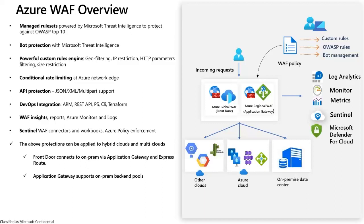Let's jump into the topic: Azure WAF. So what is Azure WAF? Basically it's a web application firewall which is cloud native and highly scalable, and protects your web applications from different sorts of attacks and vulnerabilities. It comes in two variants: a global WAF and a regional WAF. The regional WAF comes with Application Gateway, and the global WAF is the one with Front Door.